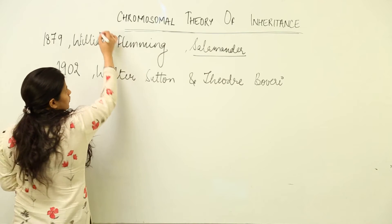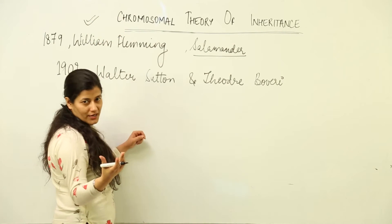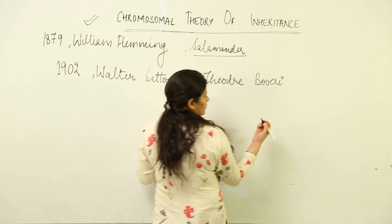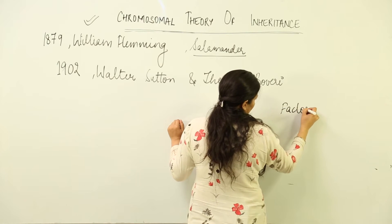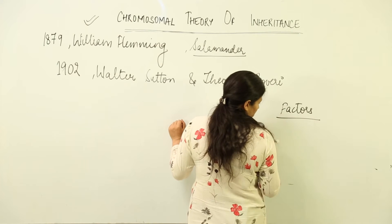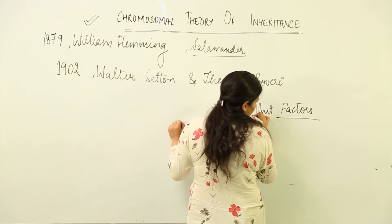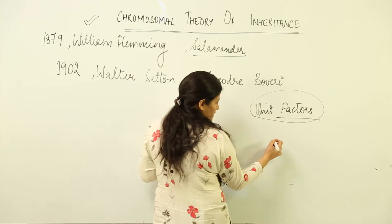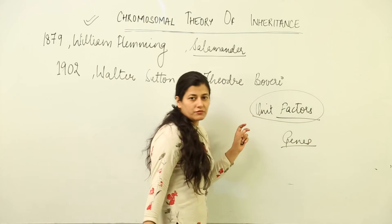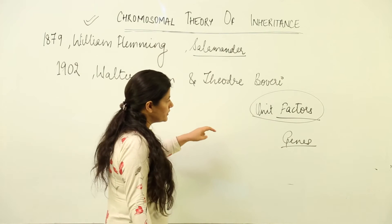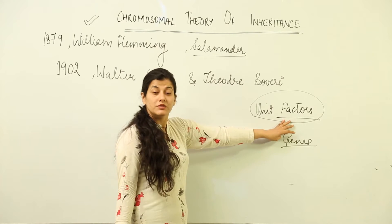They united whatever factors they could and gave us the chromosomal theory of inheritance. Mendel had two vital terms: factors and unit factors. The term 'factors' was later replaced by 'genes' — this term was given by Johnson. These factors were located on the chromosome, which is what the chromosomal theory means.